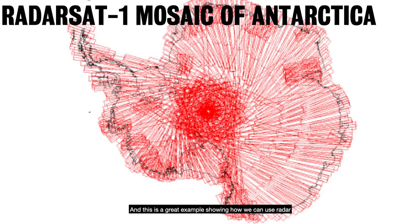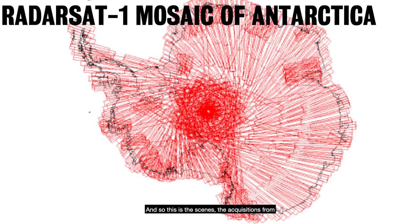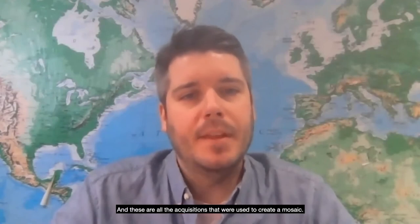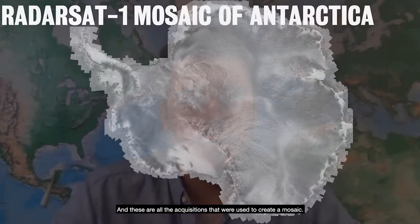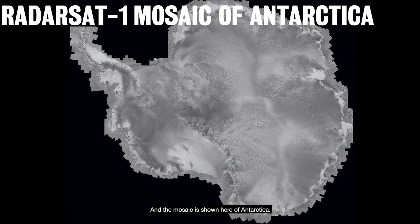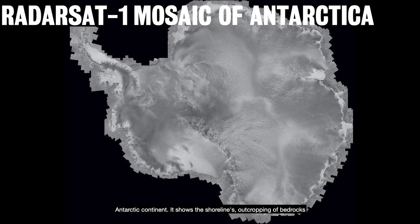This is a great example showing how we can use radar to produce mosaics. These are the acquisitions from Radarsat-1, which is a Canadian-owned synthetic aperture radar now decommissioned. These are all the acquisitions used to create a mosaic of Antarctica. It took three weeks to produce this image with 25-meter resolution of the entire Antarctic continent, showing shorelines, outcropping of bedrock, and the extent of glaciers.